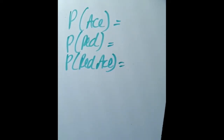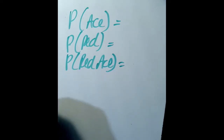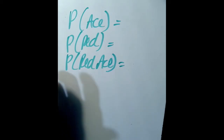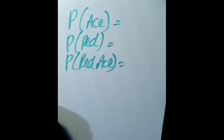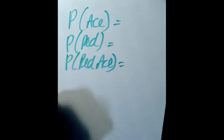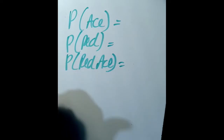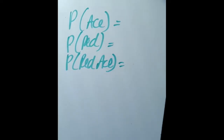Those three probabilities we just talked about are called independent events, because when you pull a card randomly it is not dependent on anything else. Drawing an ace is one out of 13, drawing a red card is one out of two, and drawing a red ace is one out of 26. Those are independent events.